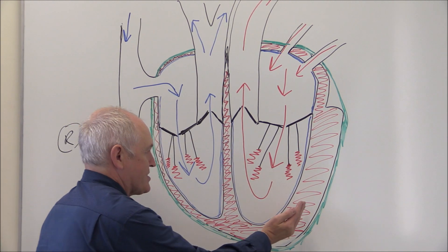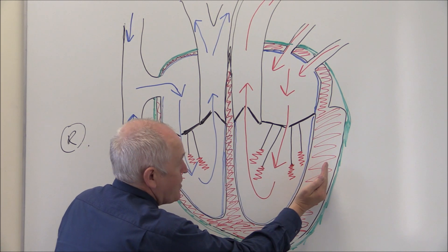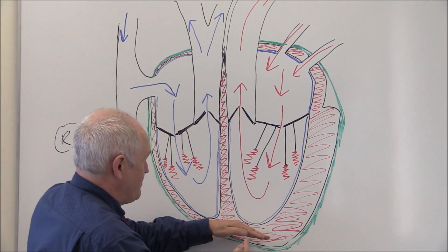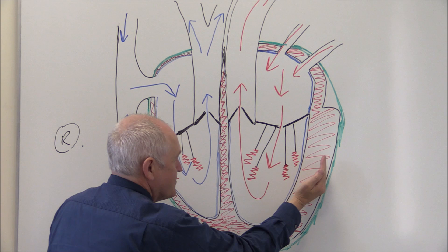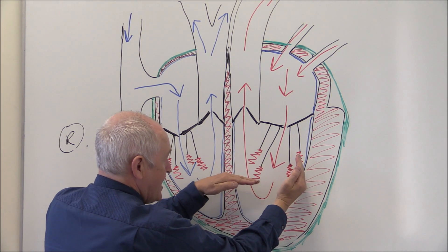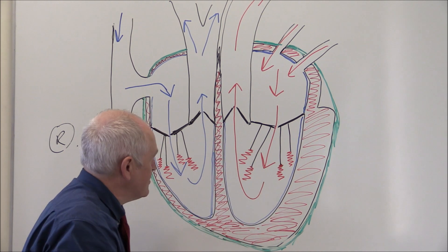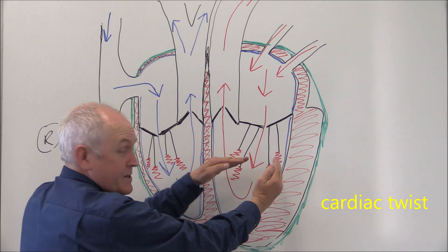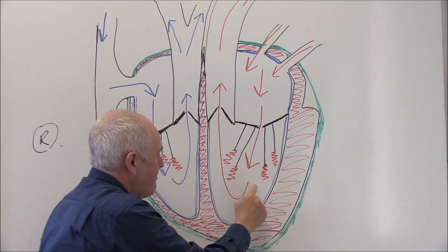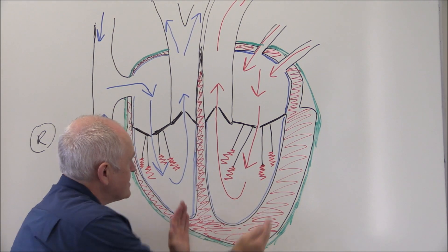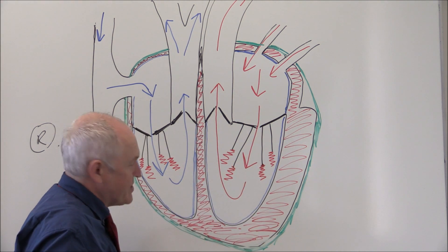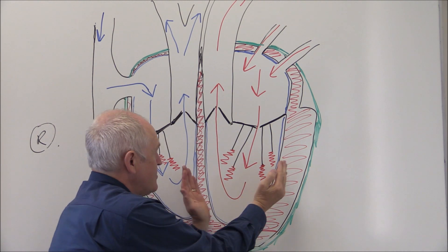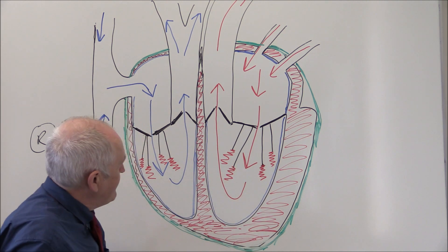The next thing that happens is the ventricle starts contracting, and that ventricular wall moves inward. At the same time, the muscle in the septum contracts and moves upward. The bottom part moves up, and at the same time the heart twists a little bit as well - that's called cardiac twist. The effect of this inward, upward, and twisting movement means that the volume of the left ventricle is going to be quickly decreased. When you decrease the volume, that's going to increase the pressure of the blood in the left ventricle.